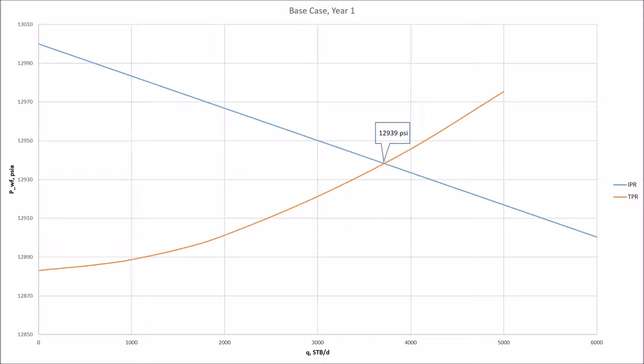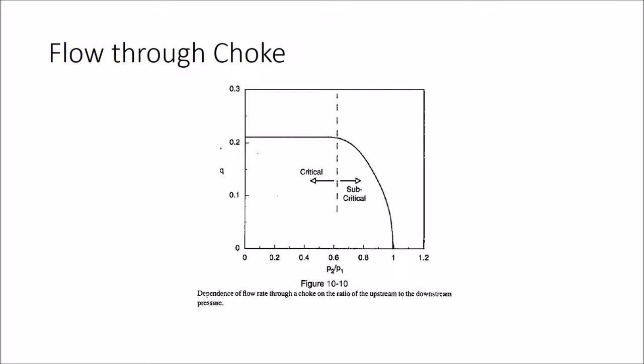Shown here is the IPR versus TPR graph over the first year of production. The intersection of the IPR and TPR curves and the corresponding flow rate to that intersection is the flow rate at which the well should be flowing for the initial year.